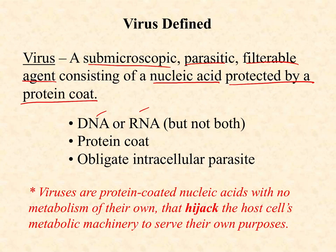At its most simple, a virus is really just a nucleic acid protected by a wrapping of protein — either DNA or RNA, not both — wrapped up in a protein coat. About half of them also have a phospholipid bilayer around them, but that doesn't appear to be required for all viruses. Only some of them seem to need it.